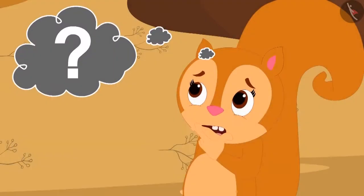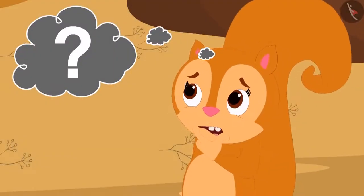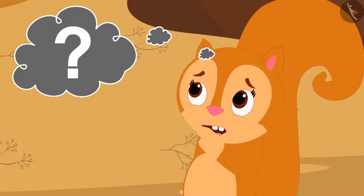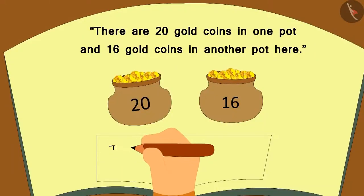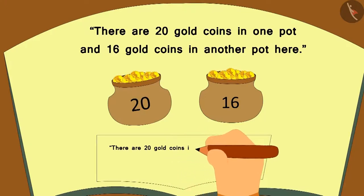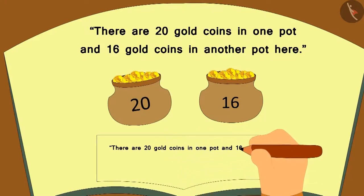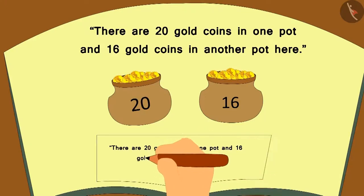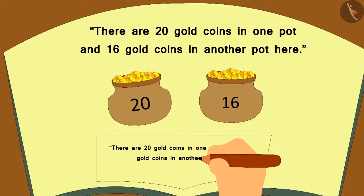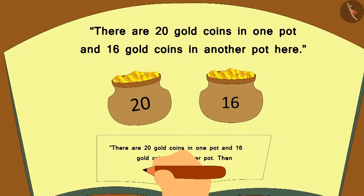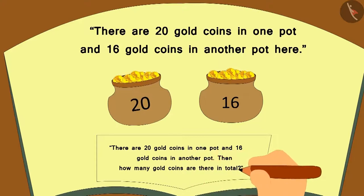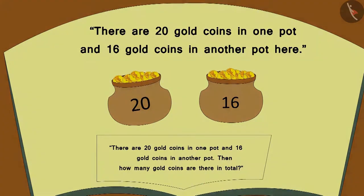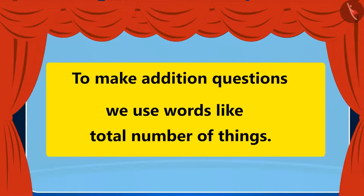After thinking for a while, Chanda wrote down a question there: There are 20 gold coins in one pot and 16 gold coins in another pot. Then, how many gold coins are there in total? Chanda has now made a question of addition.